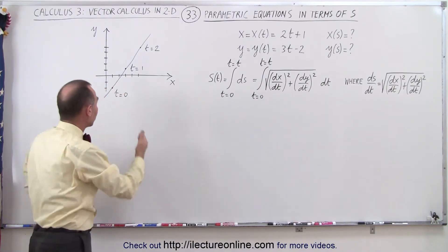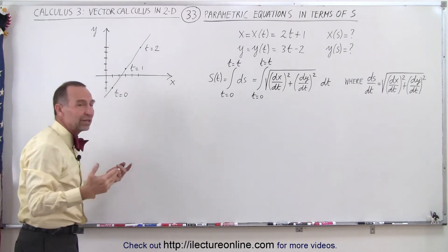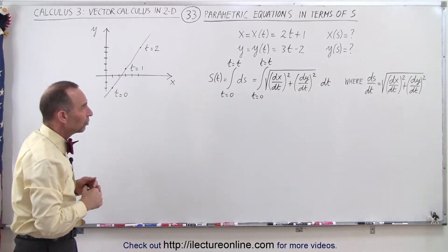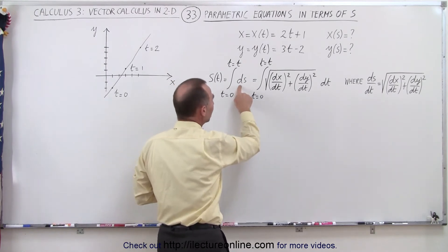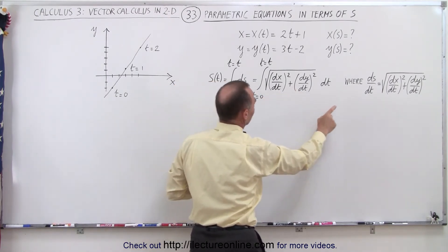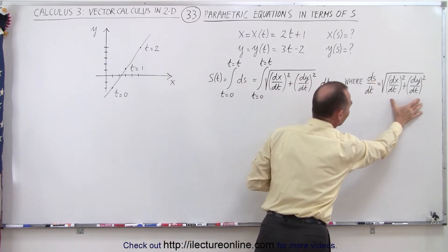In other words, let's start from where t is equal to 0 and end up anywhere on the curve where t is some other value not equal to 0. And the general equation is that ds can be defined as, let's go over here, ds/dt is defined as this.